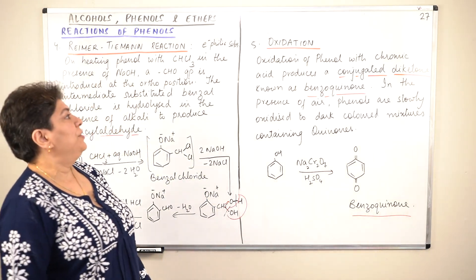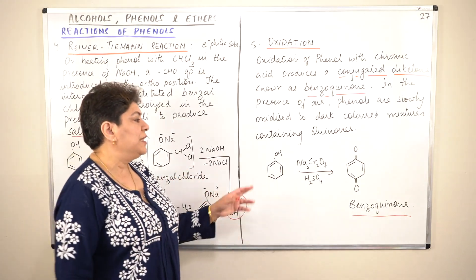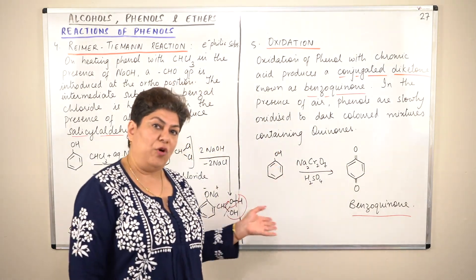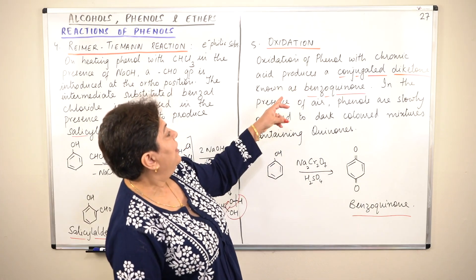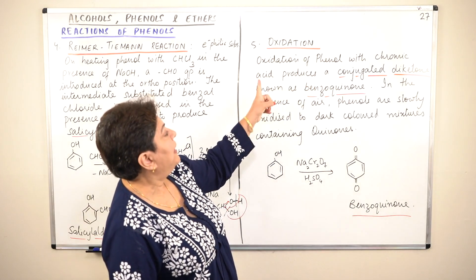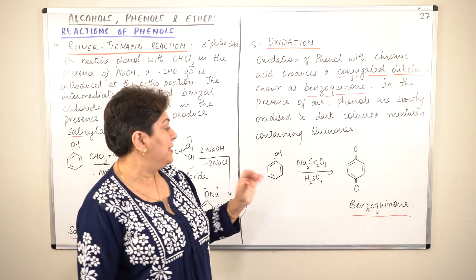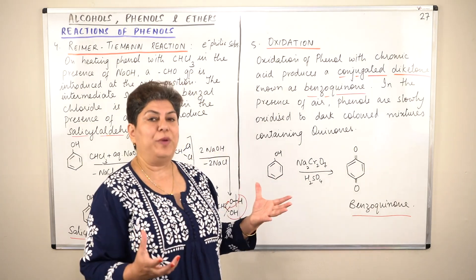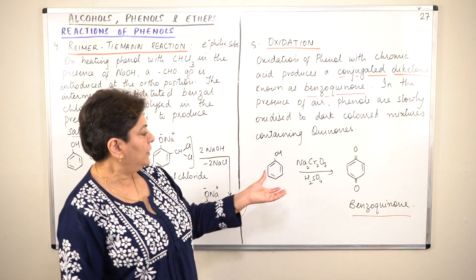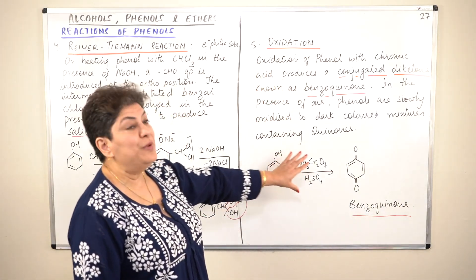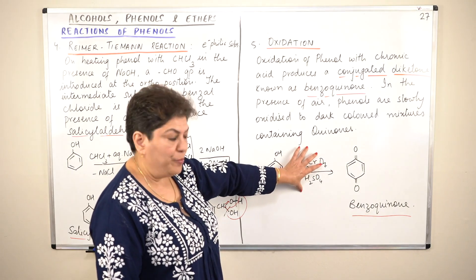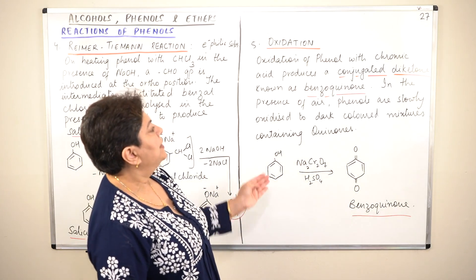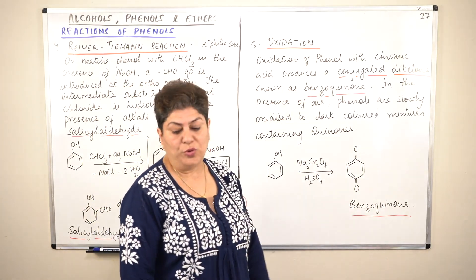Now the last type of reaction is oxidation. Oxidation of phenol results in the formation of a quinone — specifically, benzoquinone is formed. When oxidation of phenol takes place with chromic acid, which is acidified sodium dichromate (sodium dichromate and sulfuric acid), a conjugated diketone known as benzoquinone is formed.